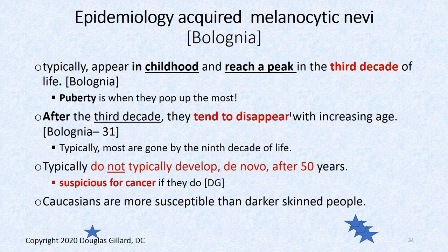Back to acquired melanocytic nevi: they typically appear in childhood and reach a peak by about the third decade of life. Puberty causes another growth spurt where many can pop up. After the third decade they tend to disappear, and many that have been with you your whole life can completely fade away by your 70s and 80s. Any moles that pop up after age 50 are always suspicious for cancer — it's very unusual to get a new flat-out mole after that age, though seborrheic keratosis or lentigo are still possible.